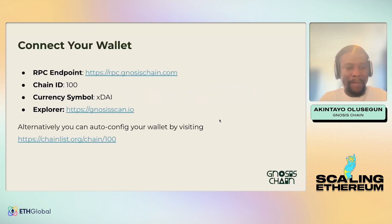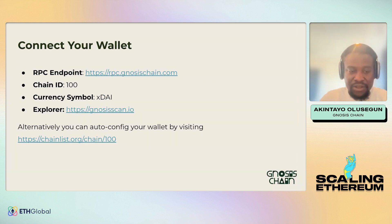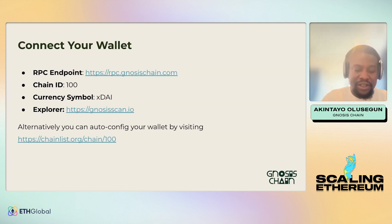You can receive support not just for grant money — you can also receive support for marketing, liquidity, networking, and much more. So where do you start? First, connect your wallet to the chain using the RPC endpoint, the chain ID, and the currency symbol. Alternatively, go to chainlist.org and navigate to the chain entry, and your wallet will be automatically configured for you.